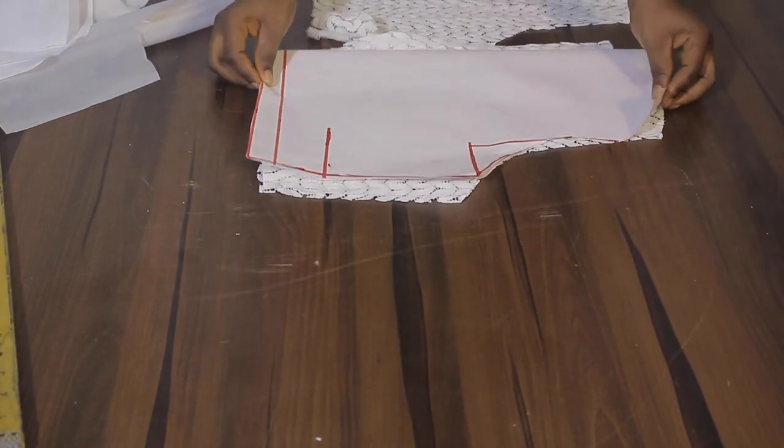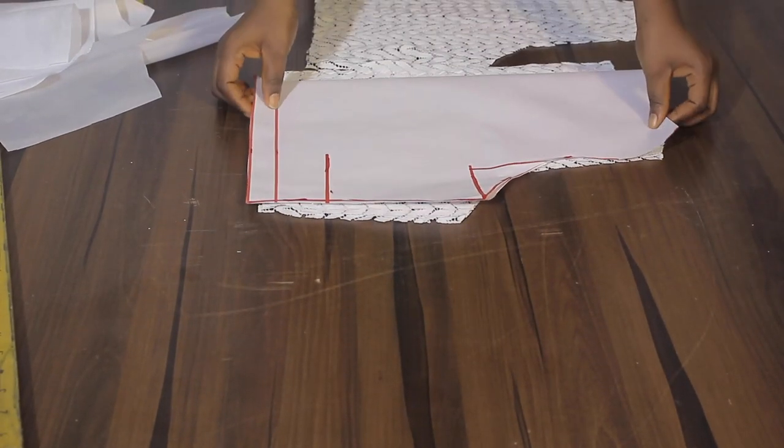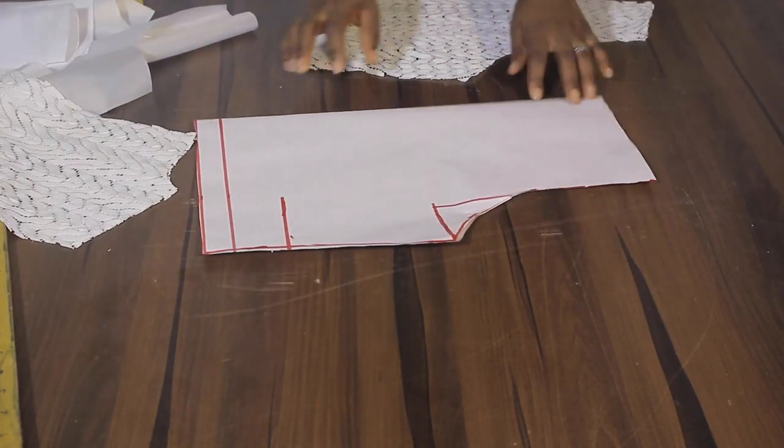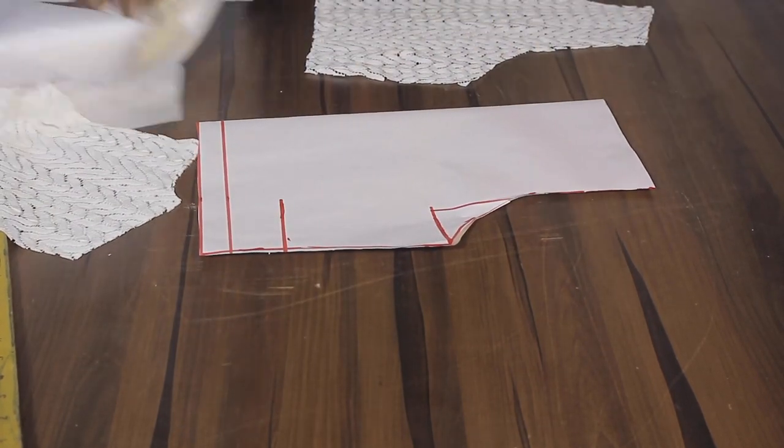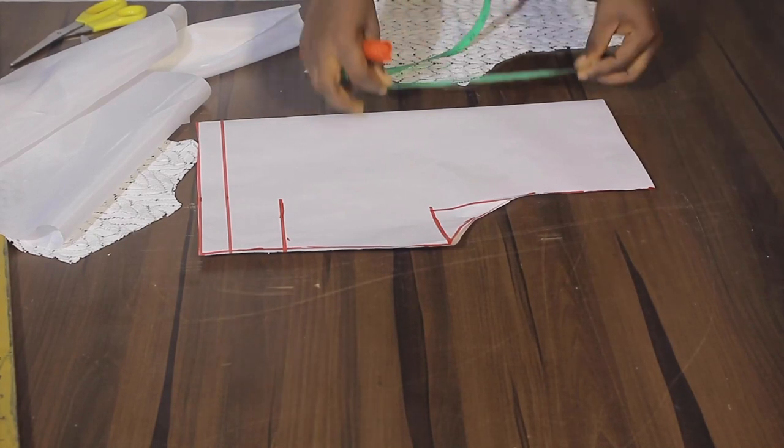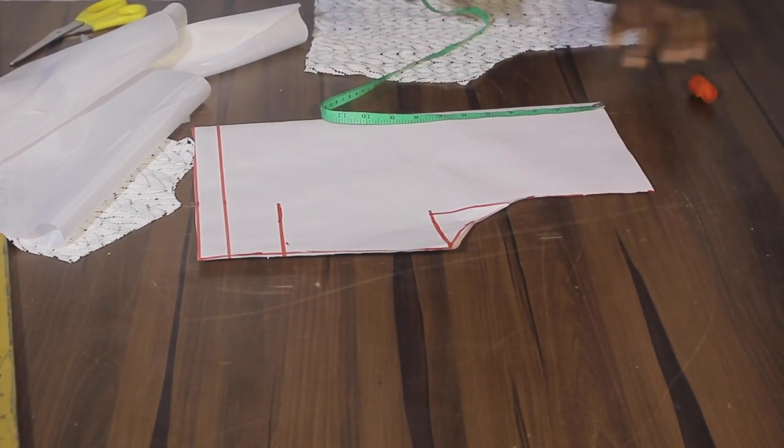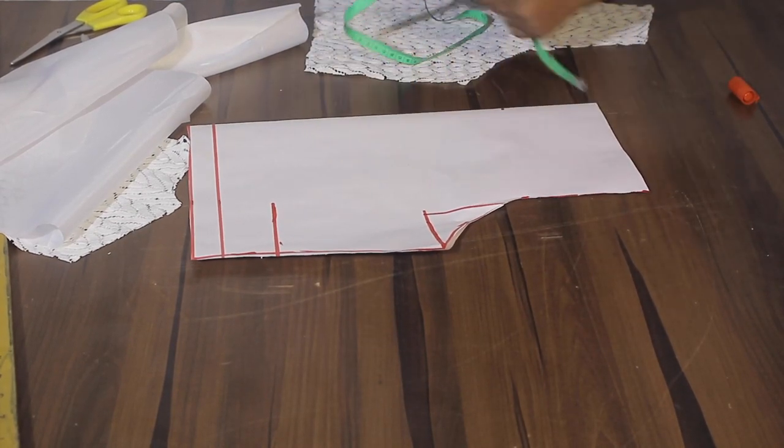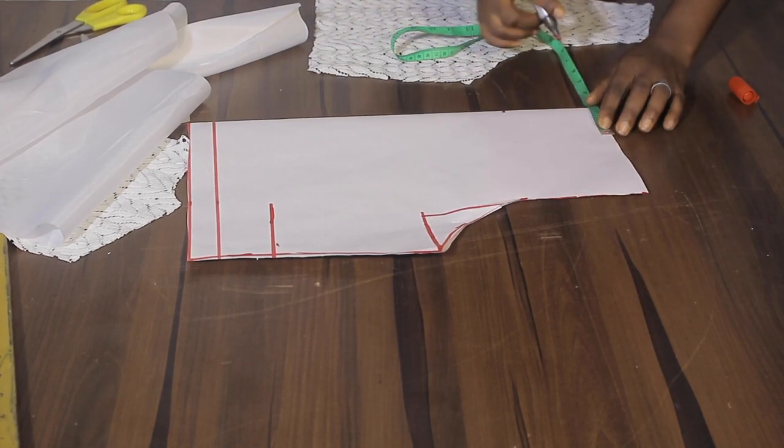But for the back remember to add your 2 inches zipper allowance. And the neckline I am going to be working with the length of 4 inches - that's the depth - and width of 3 inches.